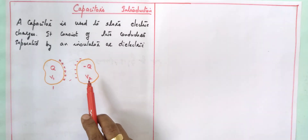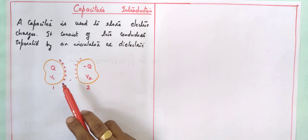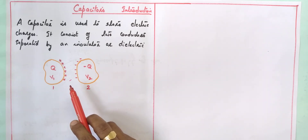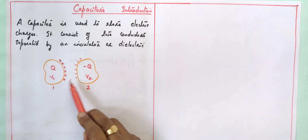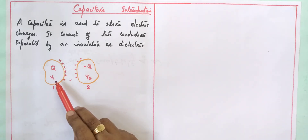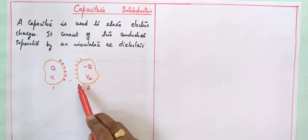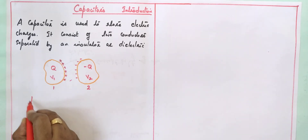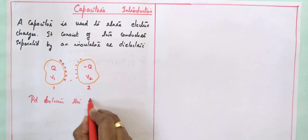A capacitor consists of two conductors — they can be of any shape, such as spherical or plane sheets. When connected to a battery, one plate becomes positive and the other becomes negative, carrying charges plus Q and minus Q, with potentials V1 and V2 respectively. As charge increases, the electric field between the plates increases, and hence the potential difference also increases.